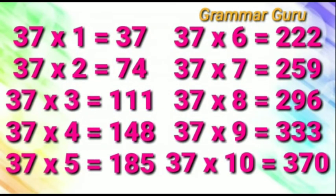37 ones are 37. 37 twos are 74. 37 threes are 111. 37 fours are 148.